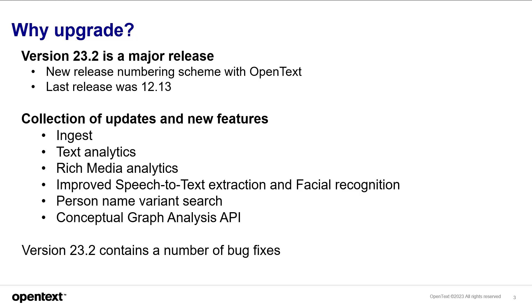Since EIDL 23.2 is a major release, we hope everyone will upgrade. It includes new ingest, text analytics, and rich media analytics features, and provides the new conceptual graph analysis API. There's also improved speech-to-text extraction, improved facial recognition, and person name variant search, as well as a number of bug fixes.